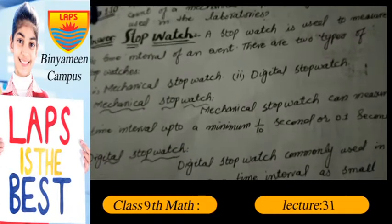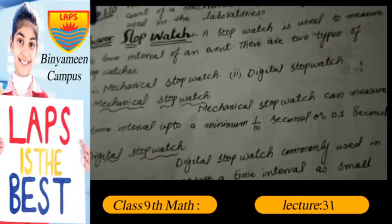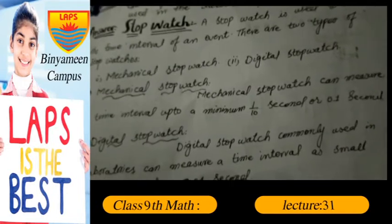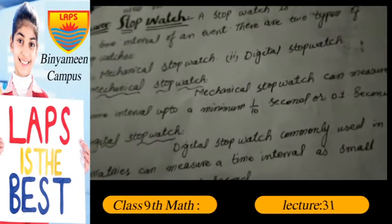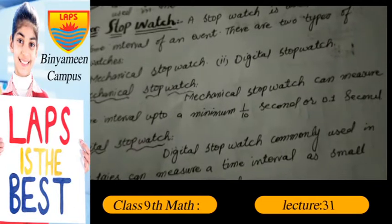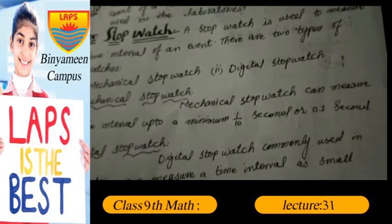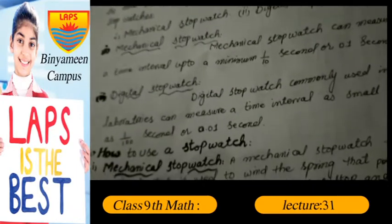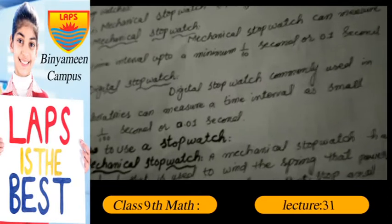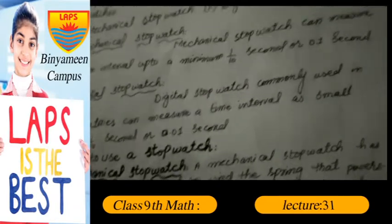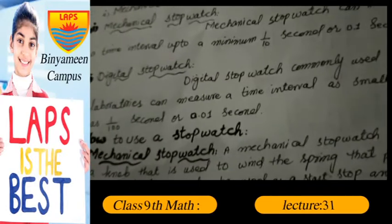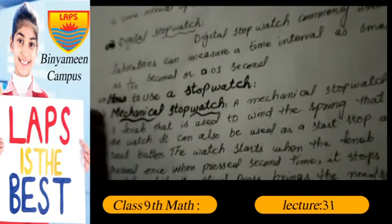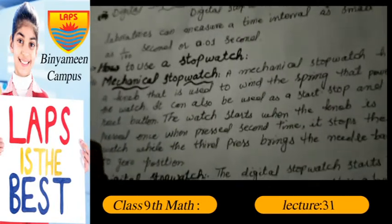There are two types of stopwatches: first, mechanical stopwatch; second, digital stopwatch. A mechanical stopwatch can measure time intervals up to a minimum of 1/10 second, or 0.1 second. A digital stopwatch, commonly used in laboratories, can measure a time interval as small as 1/100 second, or 0.01 second.